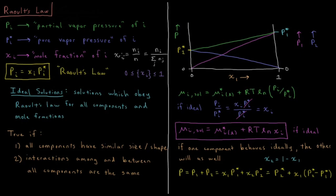The maximum value of chi is when N_I equals N, which would be 1, corresponding to a pure liquid or pure gas of substance I. The minimum value is when the number of moles of I is 0, giving a mole fraction of 0. So chi_I for every substance must fall in between, and the mole fractions of all components sum to 1.